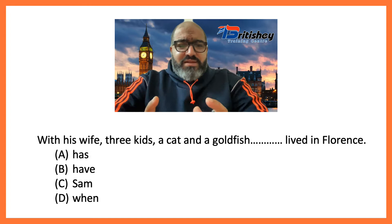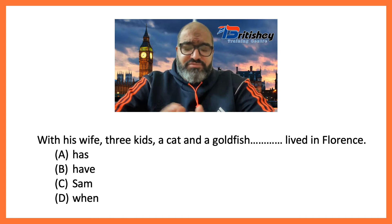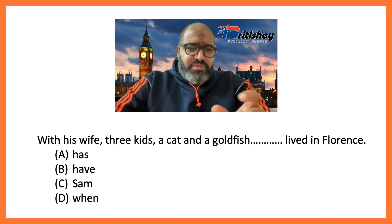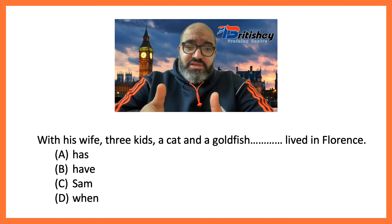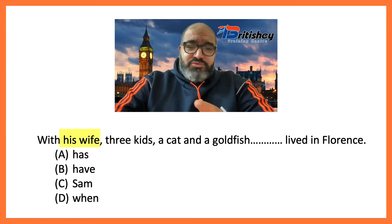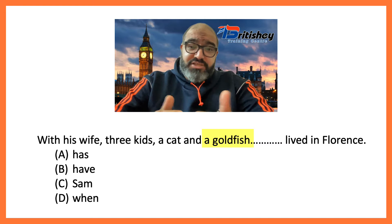Now let's analyze this sentence: 'With his wife, three kids, a cat and a goldfish lived in Florence.' We have 'with,' and we know that 'with' is a preposition. As long as it is a preposition, whatever comes after it is an object of that preposition. So we have 'his wife' — that's a noun, object of the preposition; 'three kids' — object of the preposition; 'a cat' — object of the preposition; and 'a goldfish' — object of the preposition.